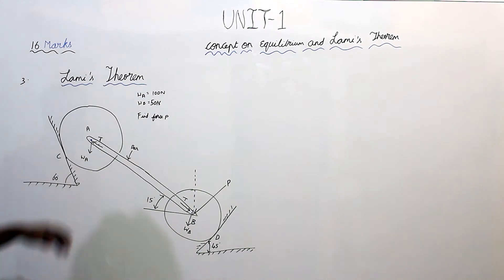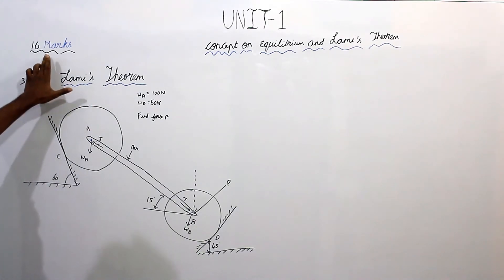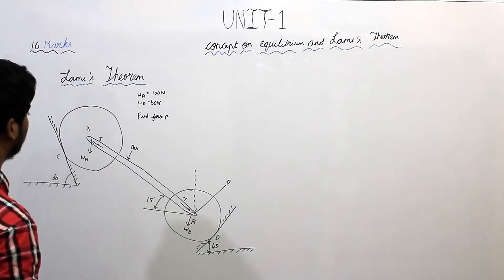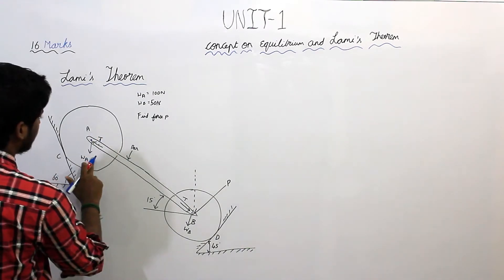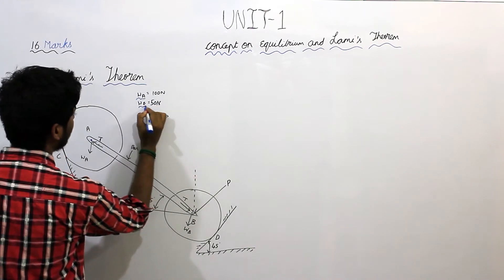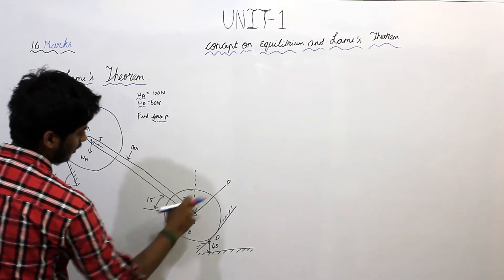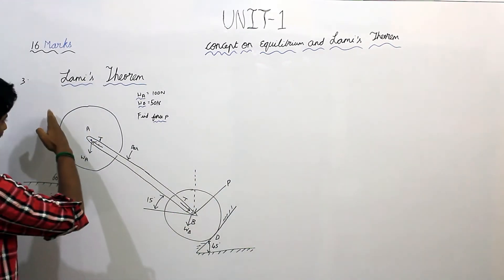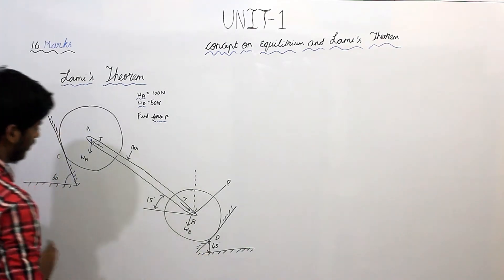We will take a look at the Lami's Theorem Passage and the third 16-part problem. This is the given problem: the weight of object A, the weight of object B — find force P. This is the force. This is an inclined plane, inclined at an angle of 16 degrees, and this is 45 degrees.